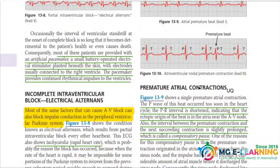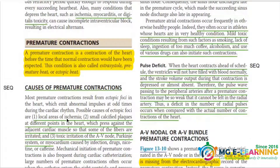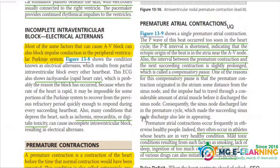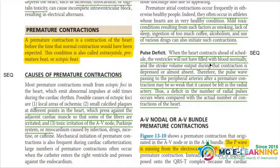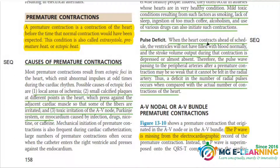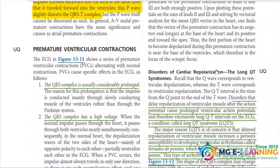On the next page, premature contraction — you have to know its definition and its causes. It is important for CQ. Premature atrial contraction is also important. Next one is the pulse deficit, which is very important. Then premature ventricular contraction, also very important.